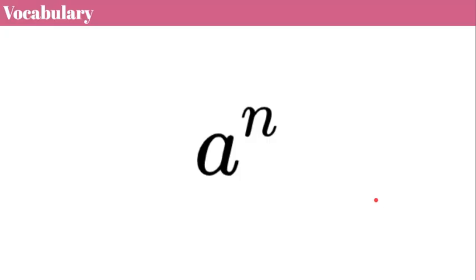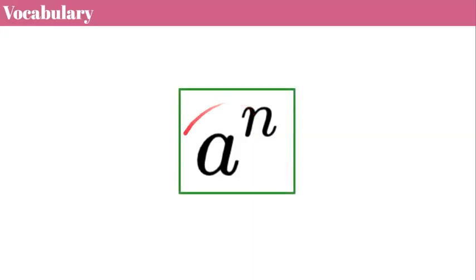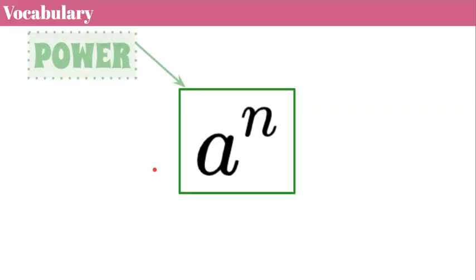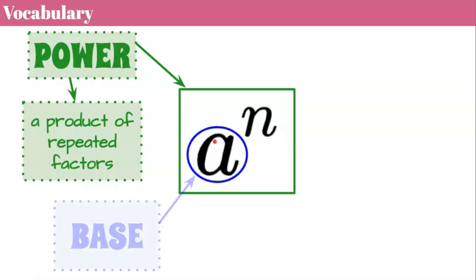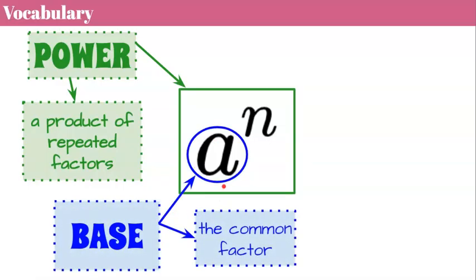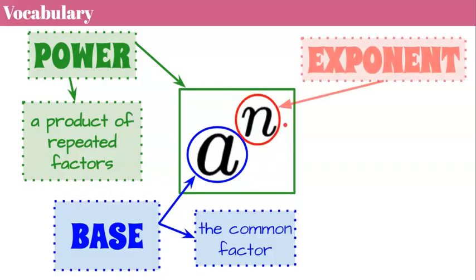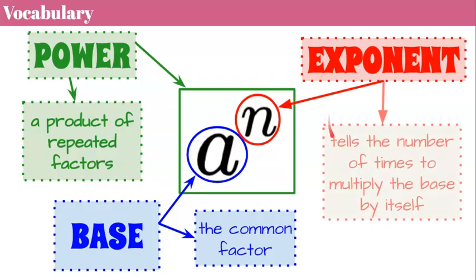Let's begin with understanding power, exponent, and some other vocabulary words that involve this expression. We have a to the n — that is how it's read. This expression is referred to as a power. A power is a product of repeated factors. It has two parts: A represents the base — the base is the common factor in the power — and n is the exponent. The exponent tells the number of times to multiply the base by itself.